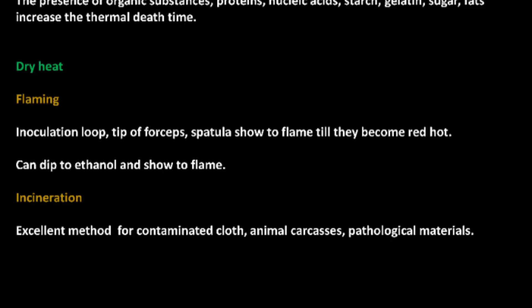Under dry heat, flaming is used for inoculation loops, tips of forceps, and spatulas — held in the flame until red hot, or dipped in ethanol and then flamed. Incineration is an excellent method for contaminated cloth, animal carcasses, and pathological materials.